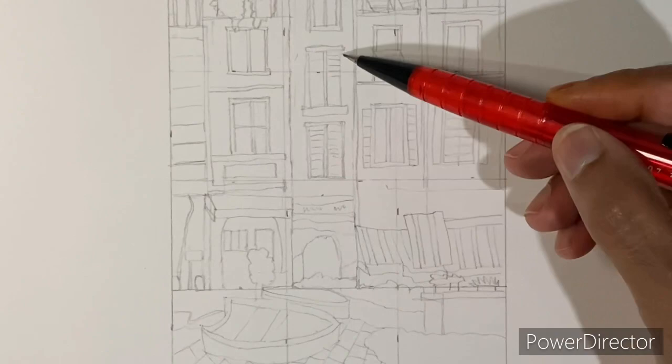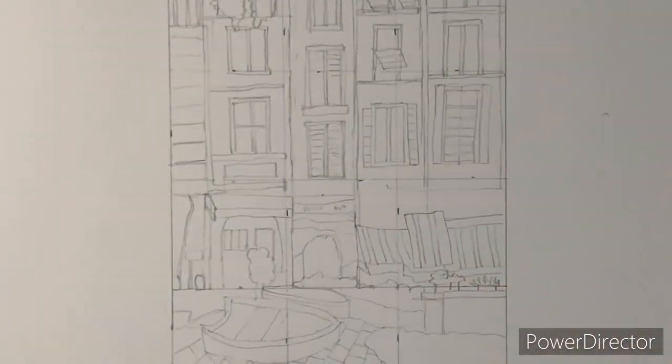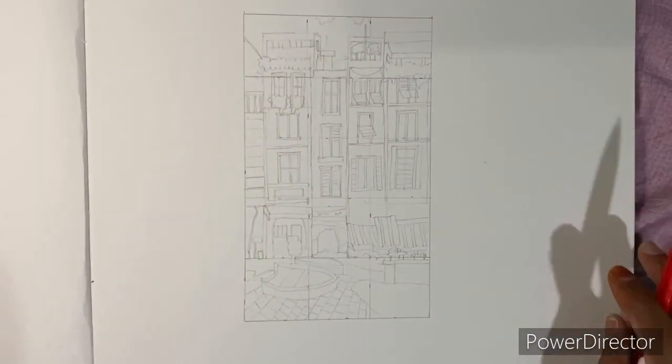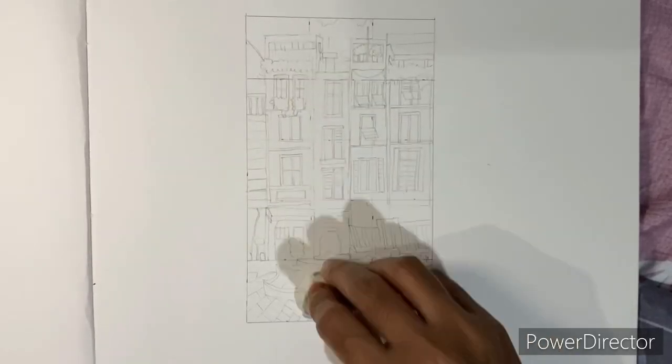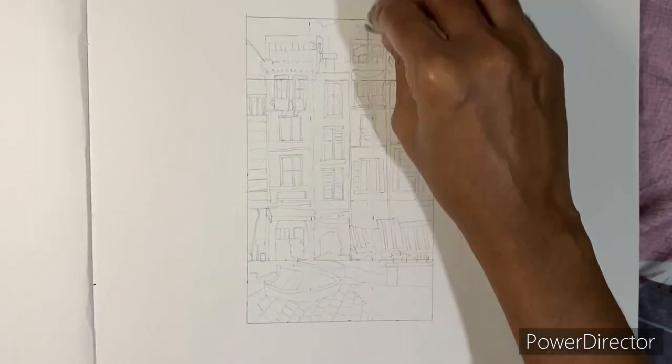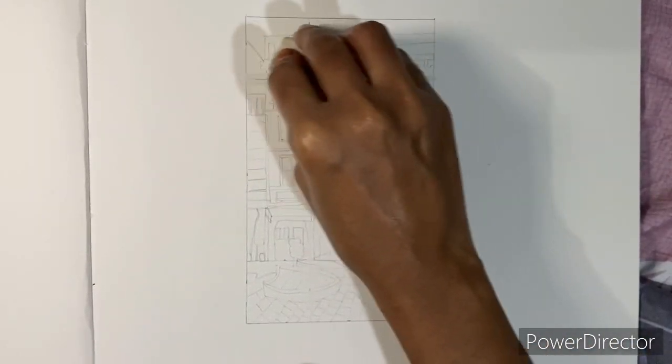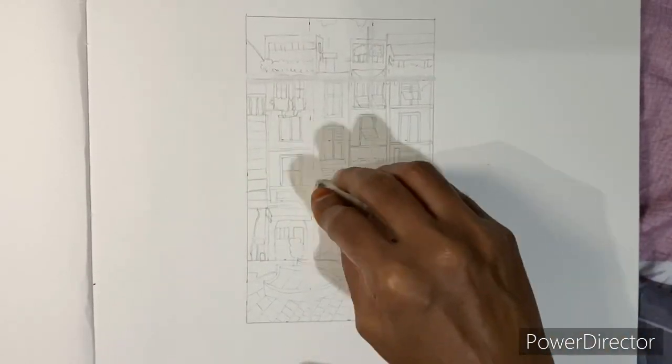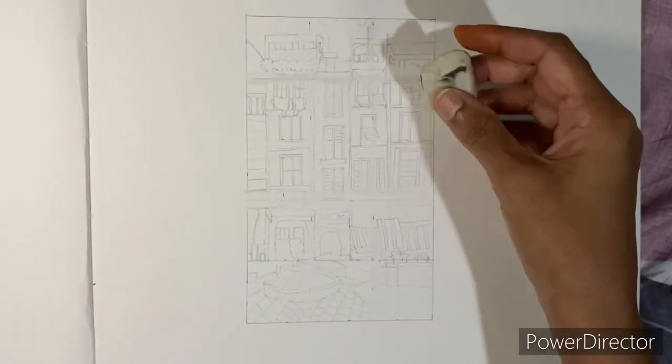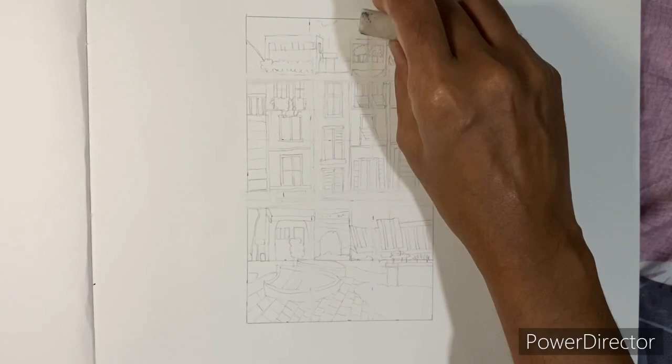I am done with the drawing. Now, it's time to erase the grids. Make sure your eraser is clean. And if your lines are drawn very lightly, it should be very easy to clean the grid lines.